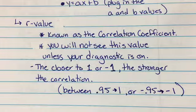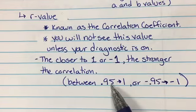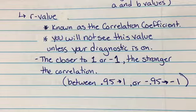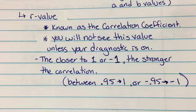As far as r-value being strong or weak, it's stronger when it's closest to one or negative one. Basically between these numbers: if it's between 0.95 and one, or negative 0.95 and negative one, then that's a strong correlation coefficient.